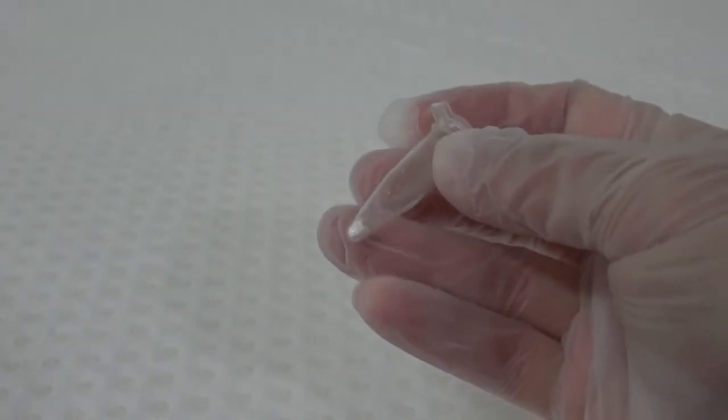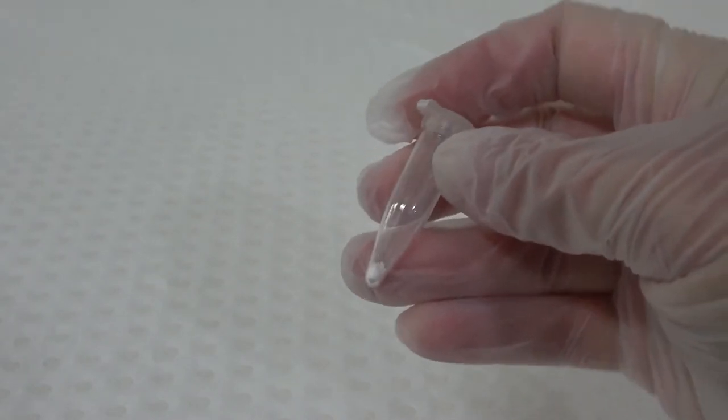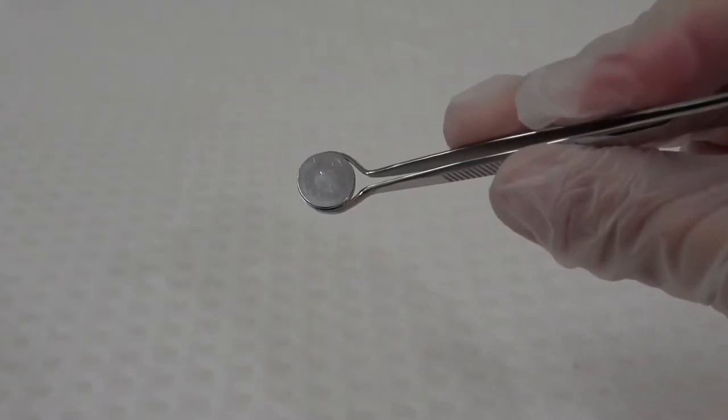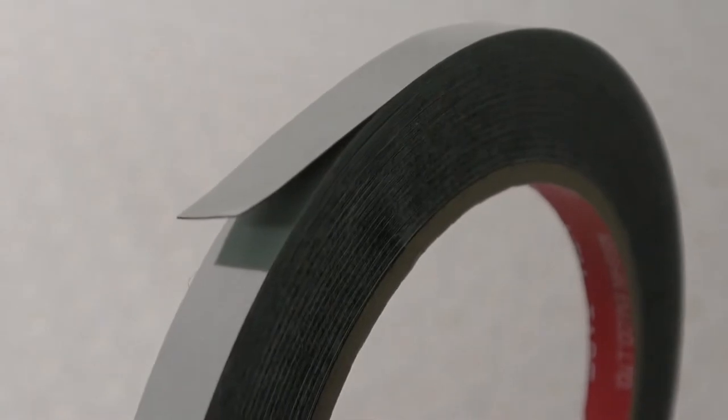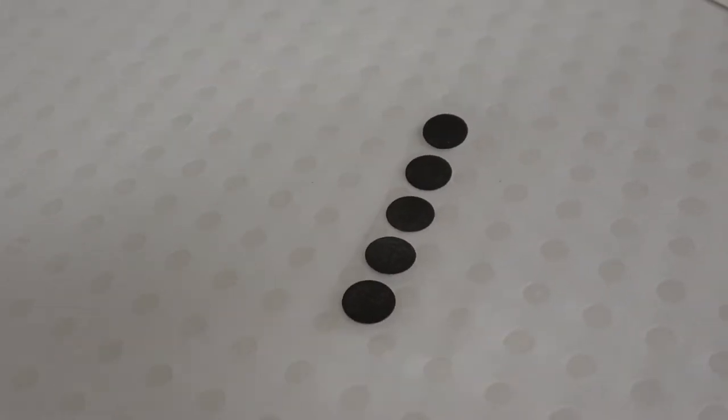Materials: A very small amount of the powdered sample, a tenth of a gram is more than enough. A small SEM stub. Double-sided adhesive. At the EMU we provide users with double-sided conductive carbon dots.